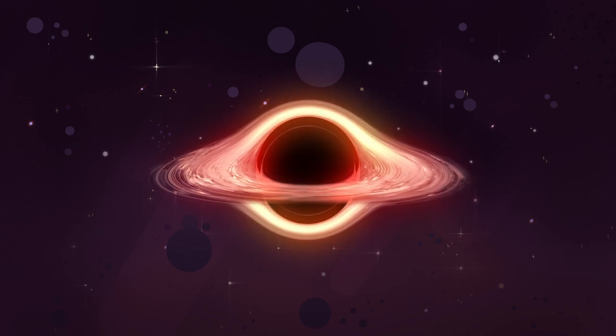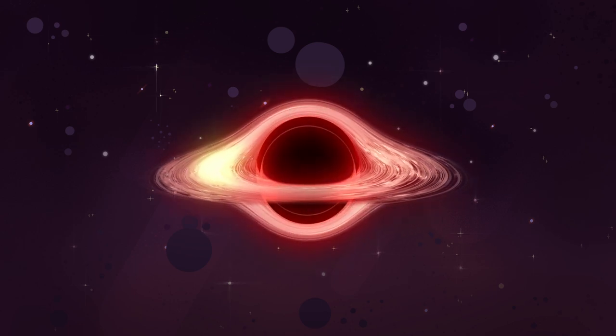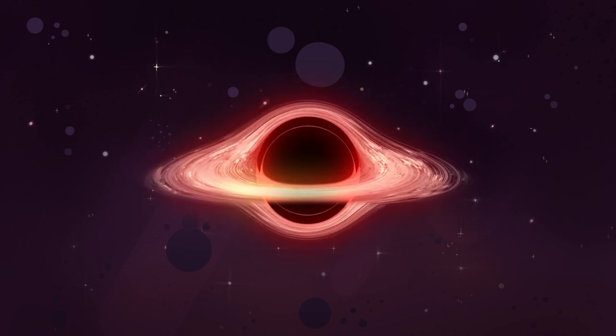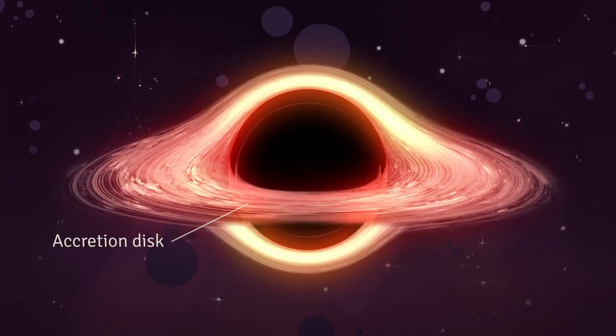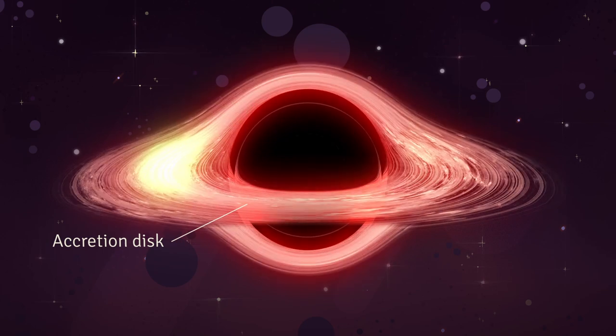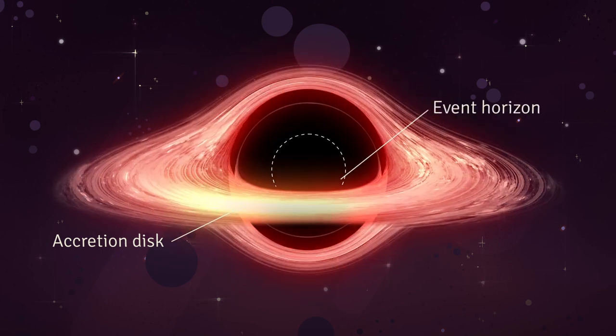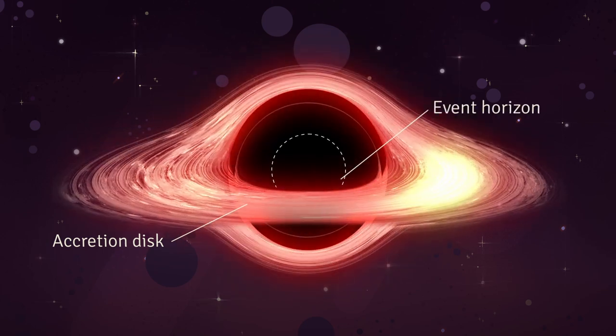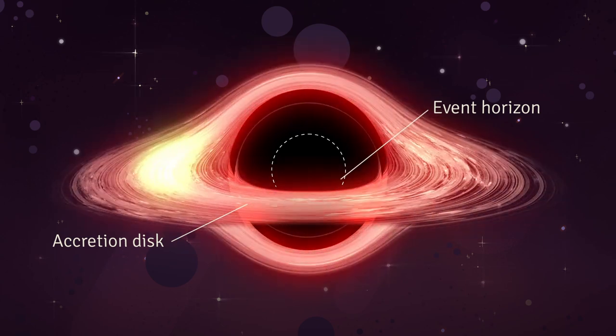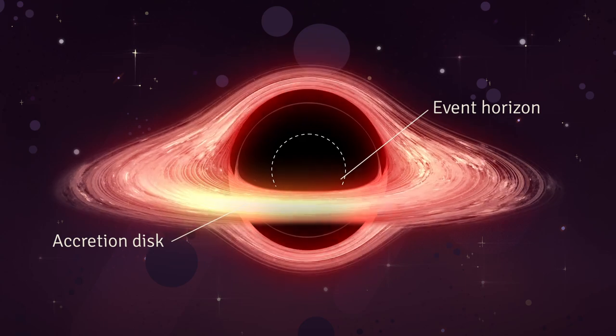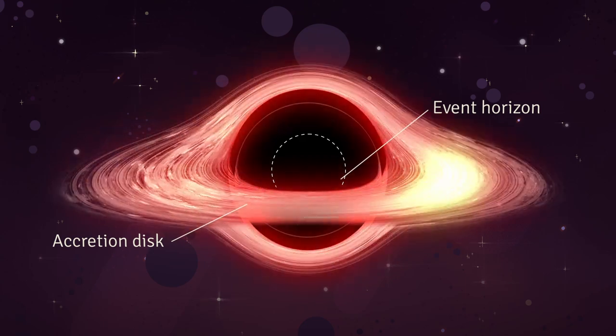It's counterintuitive to think of black holes as energy sources, but that's exactly what they are thanks to their accretion disks—circular, flat structures formed by matter falling into the event horizon. Because of conservation of angular momentum, particles there don't just plummet straight into the black hole. Instead, they slowly spiral.